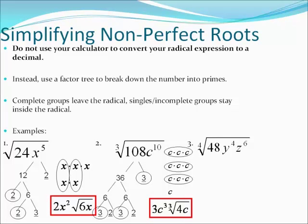Try number three and pause the video until you're ready. When you break down 48 in a factor tree, we do four times twelve. Four breaks down into two times two. Twelve breaks down into two times six. Six breaks down into two times three. This is the fourth root so it takes four of the same number — which we have: four twos. They're going to come out. Three is left over and will stay inside the radical.